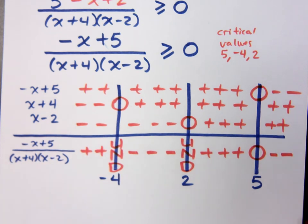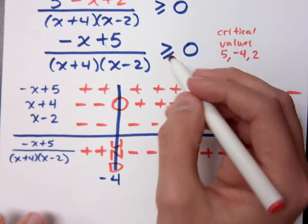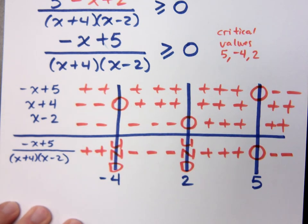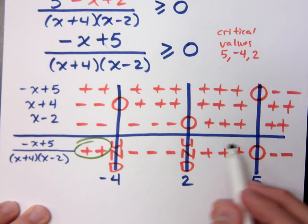Now, what was I looking for here with my sign chart? What did I want? I wanted greater than or equal to in this example, so that meant I was looking for what? The positives. So right here and right here.